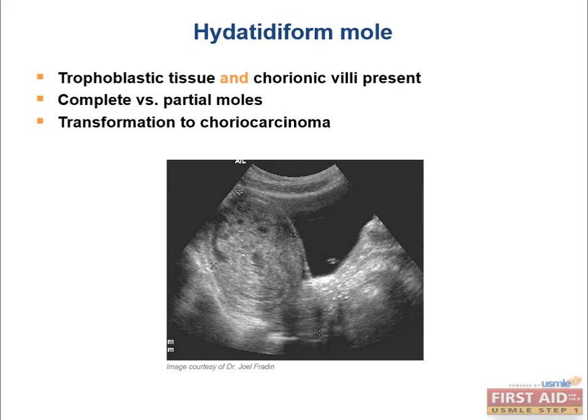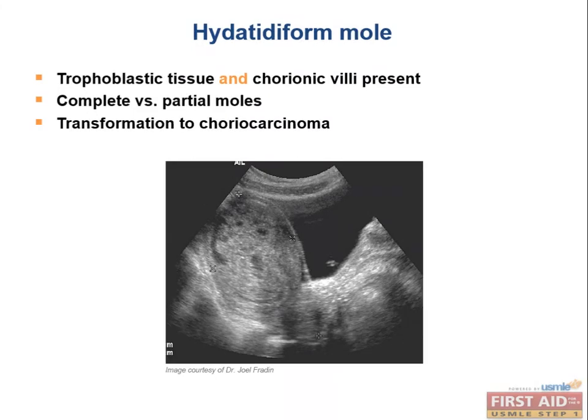Hydatidiform moles can transform to choriocarcinoma by first invading prior to their transition. An invasive mole has both trophoblastic tissue and chorionic villi, whereas mere trophoblastic tissue present is a choriocarcinoma. A complete mole has a greater probability of becoming an invasive mole or choriocarcinoma, whereas a partial mole has a slightly lesser probability, but both confer increased risk of choriocarcinoma.